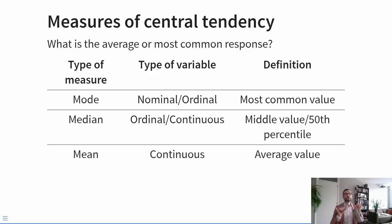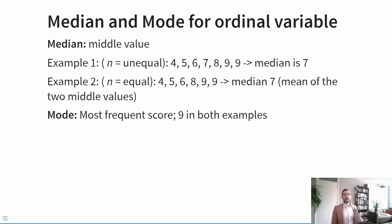The median literally is the middle value in my sample: if you took everybody's scores and ordered them from low to high, the middle value is the median. It is also known as the 50th percentile — 50% of people scored lower and 50% scored higher. Let's look at two examples. First, scores of 4, 5, 6, 7, 8, 9, and 9: with an odd number of observations, the middle value is 7, so the median is 7. In the second example with an even number of observations — 4, 5, 6, 8, 9, 9 — we have two middle values, 6 and 8, and the median must be exactly between those, so we again report a median of 7. When computing the median: if you have an odd number of cases, pick the middle value; if even, take the average of the two middle values.